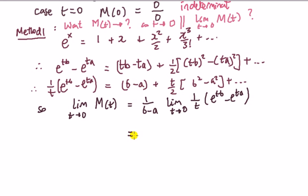this is equal to 1 over b minus a dot b minus a, which cancel, hence 1. Hence, we can conclude that the MGF takes the value 1 at t is zero. That's method 1, using the Taylor expansion.